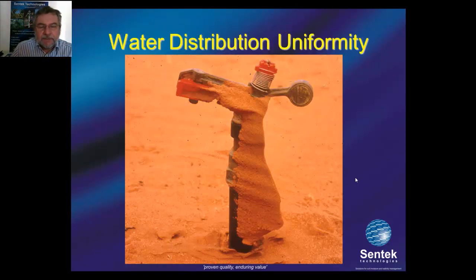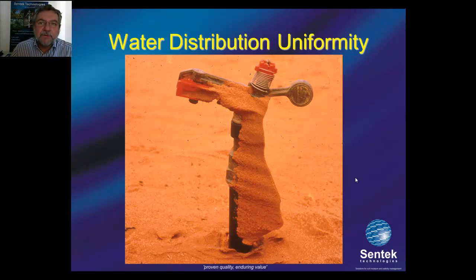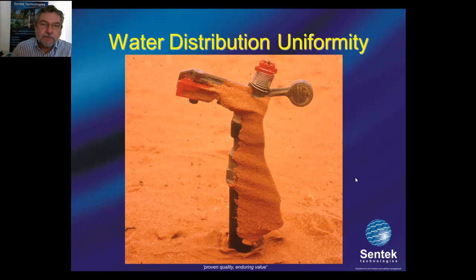However, what's probably not well known is that water distribution uniformity coming from irrigation systems itself can vary quite significantly, and also poses a challenge of where to put probes.